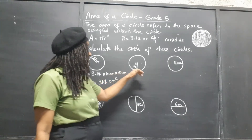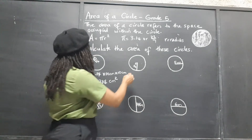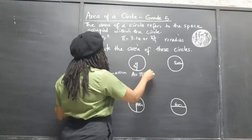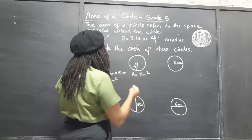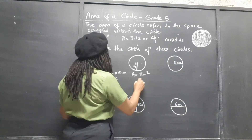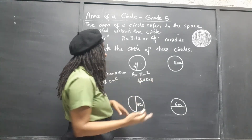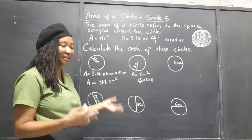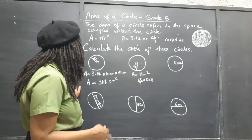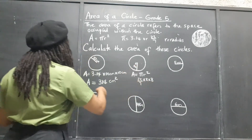Here the radius is 8 meters. Area is pi r squared, so let's use pi in its fraction form this time. That would be 22 over 7 times 8 times 8. So even though 8 is not a multiple of 7, just for practice let's use pi in its fraction form. 8 squared is 64, so we have 22 times 64.